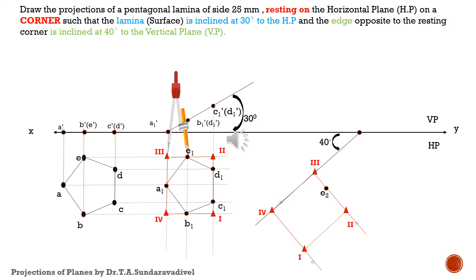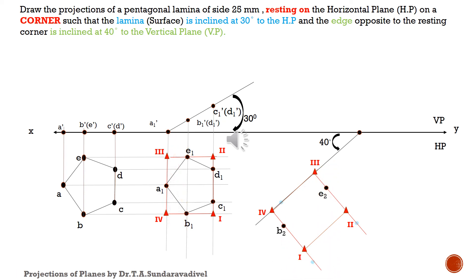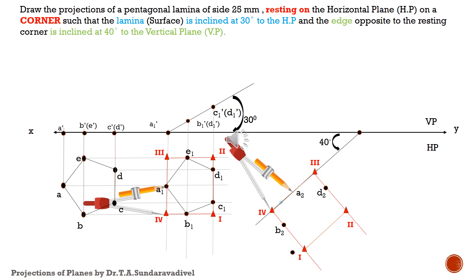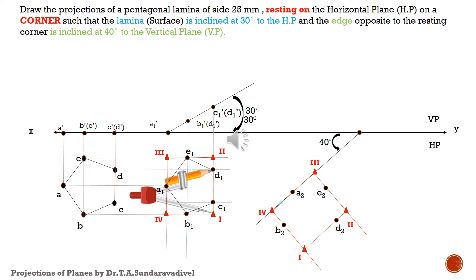The next step is to transfer all points — a1, e1, d1, c1, b1 — to the corresponding lines in the inclined box. Take the distance of 3–e1 using a compass and transfer it to the corresponding line to get point e2. Similarly, take the distance of 4–b1 and transfer it from point 4 to get b2. Take the distance of 4–a1 from the corner and transfer it to the corresponding line to get a2. Similarly, do the same for d2 and c2.